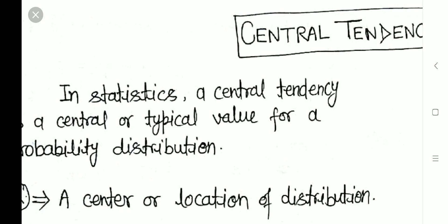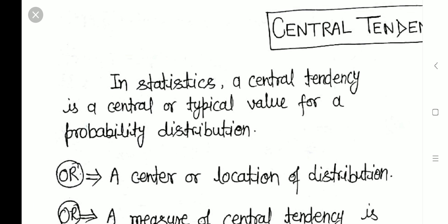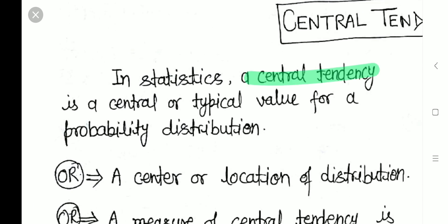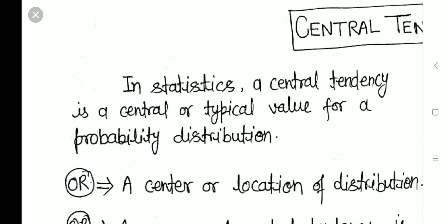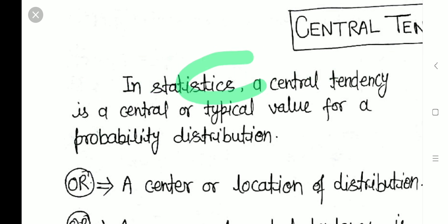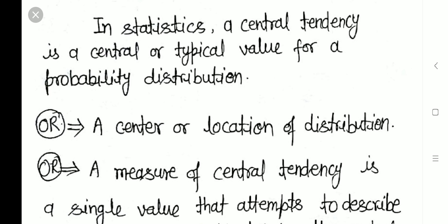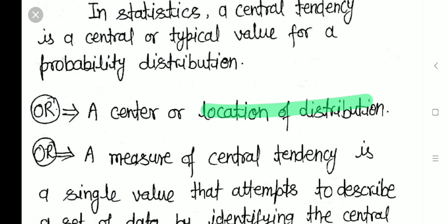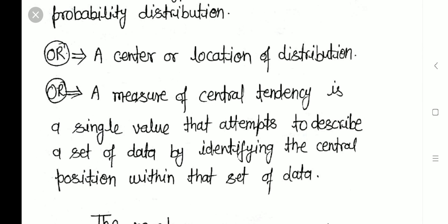Let us start the topic: central tendency. This is a very important topic of statistics. In statistics, a central tendency is a central or typical value for a probability distribution. It refers to the maximum value around which a distribution is done — that central value is known as the central value. It can also be defined as the center or location of a distribution.